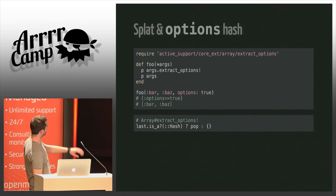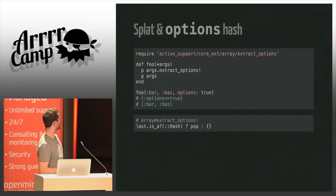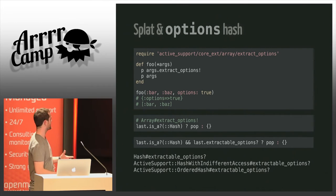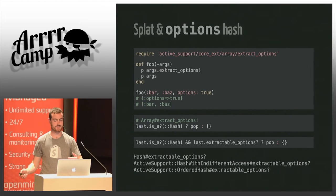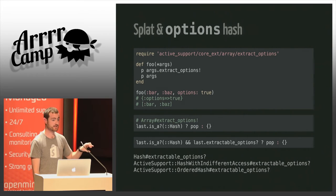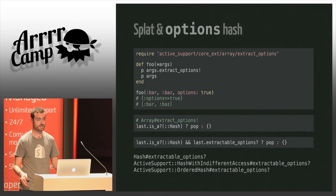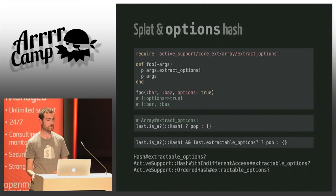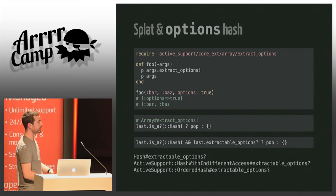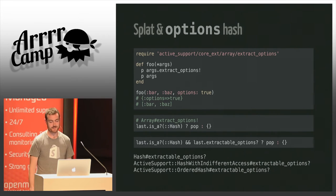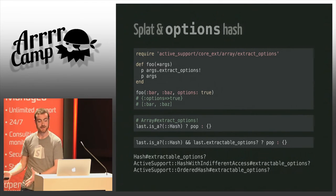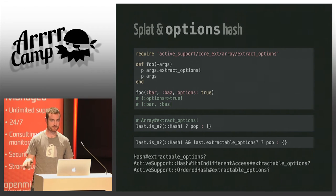In Rails, they define `extractable_options?` in Hash to only work with instances of Hash, and then redefine it in other subclasses — because they had issues with Mash, Mongo, and similar things. It always happens. We really wanted this to come into Ruby itself so we would all agree on how it should work.